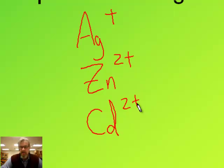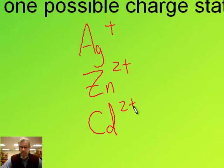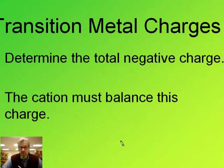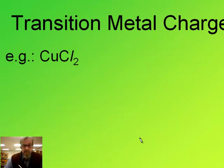Otherwise there's more than one state of charge for these different metals. How do we know what the charge is on a metal? There are two methods depending on where we're starting from. The first method is if we know the formula of the compound, we can figure it out by looking at the anion. Because compounds are neutral, this allows us to figure this out. We determine the total negative charge present because of the anion or anions, and then the cation has to balance that charge.